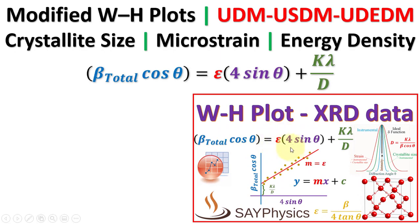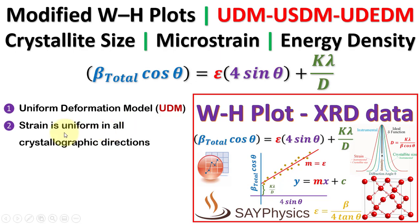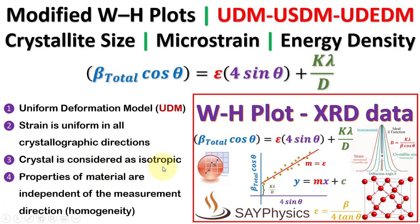We have already discussed the calculation of crystallite size and microstrain by Williamson-Hall plot. It is to be noted that the Williamson-Hall plot is based on the Uniform Deformation Model, in short UDM, in which the strain is uniform in all crystallographic directions. The crystal is considered as isotropic and the material is homogeneous.